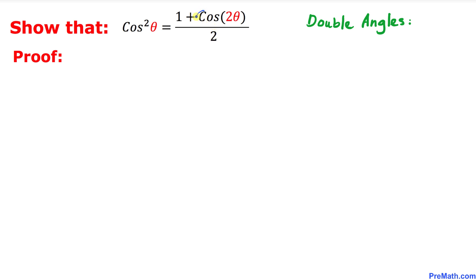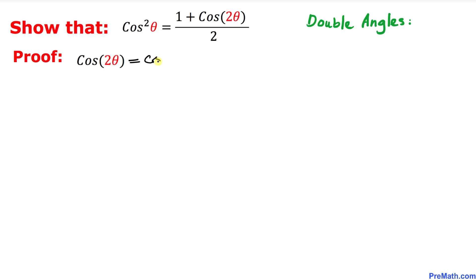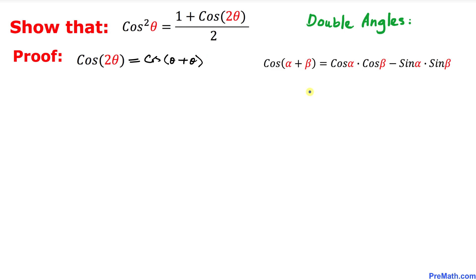Let's focus on this double angle part only — cosine of two theta. We can write cosine of two theta as cosine of theta plus theta.